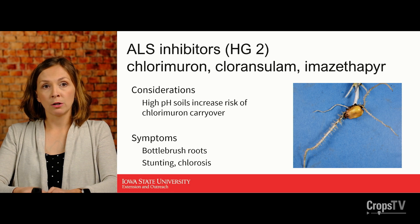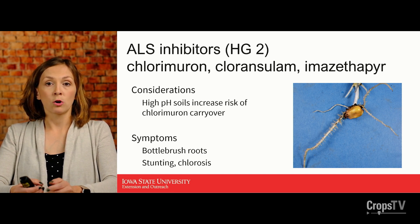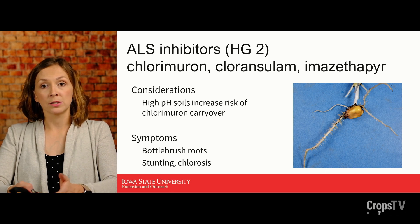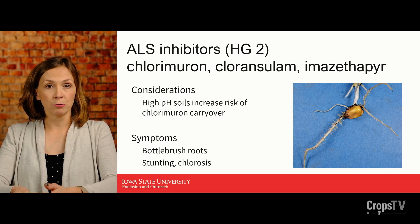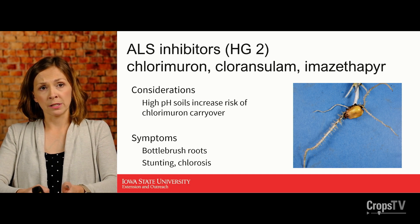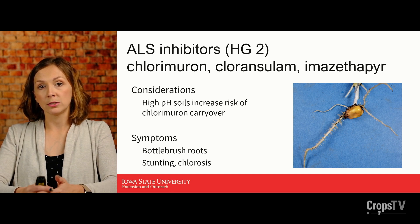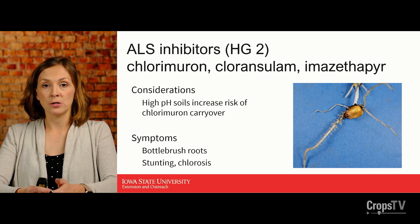ALS inhibitors are members of the group 2 herbicides. Products used in soybean such as chlorimuron, chloransulam, and imazethapyr are quite common causes of carryover issues. We also use group 2 products very commonly in corn, which can increase our risk. In particular, chlorimuron is likely to carry over in high pH soils and cause injury to corn the following year. So those high pH soils may be a consideration in your applications, along with herbicide rate and timing.